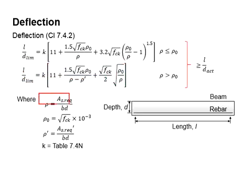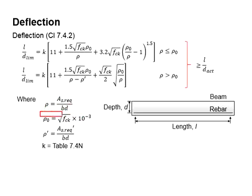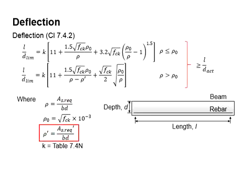Rho represents the area of reinforcement bar required divided by b×d, while rho-naught is the square root of the compressive strength of concrete. As for rho-prime, the area of compressive reinforcement bar required divided by b×d is calculated. The k value is obtained from Table 7.4n.